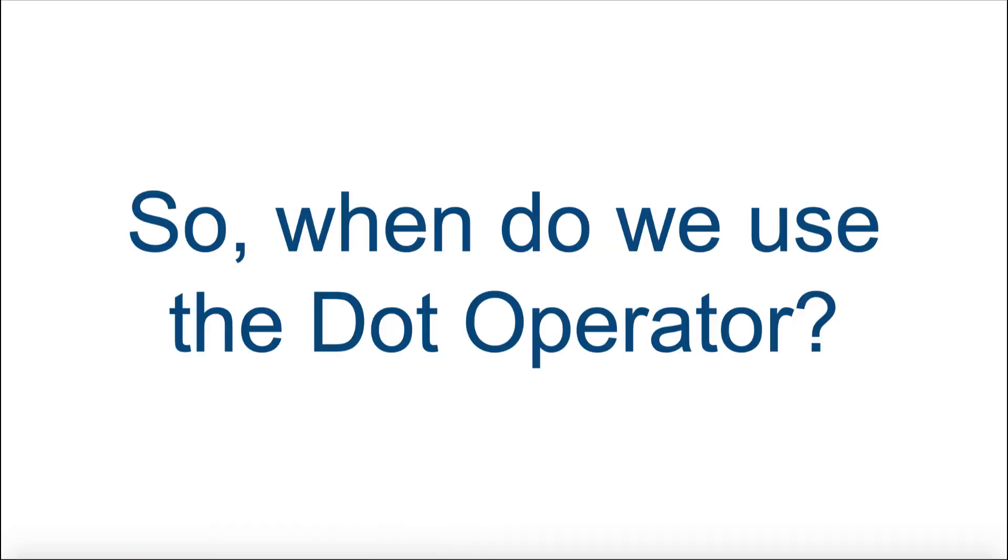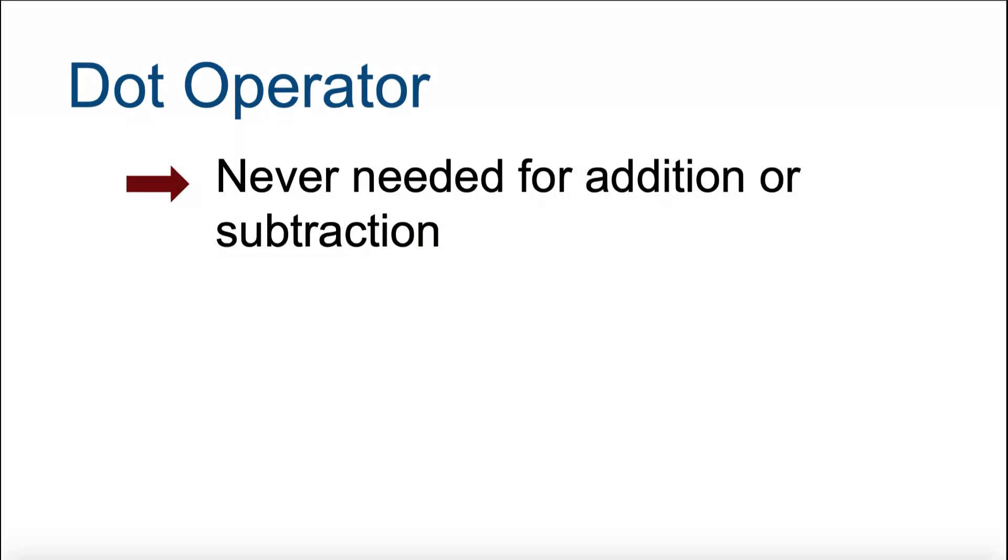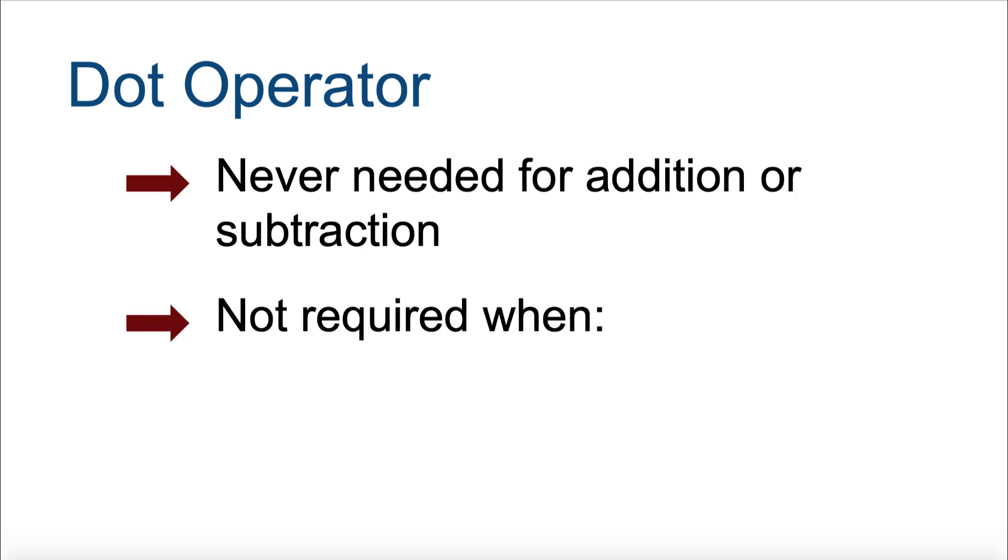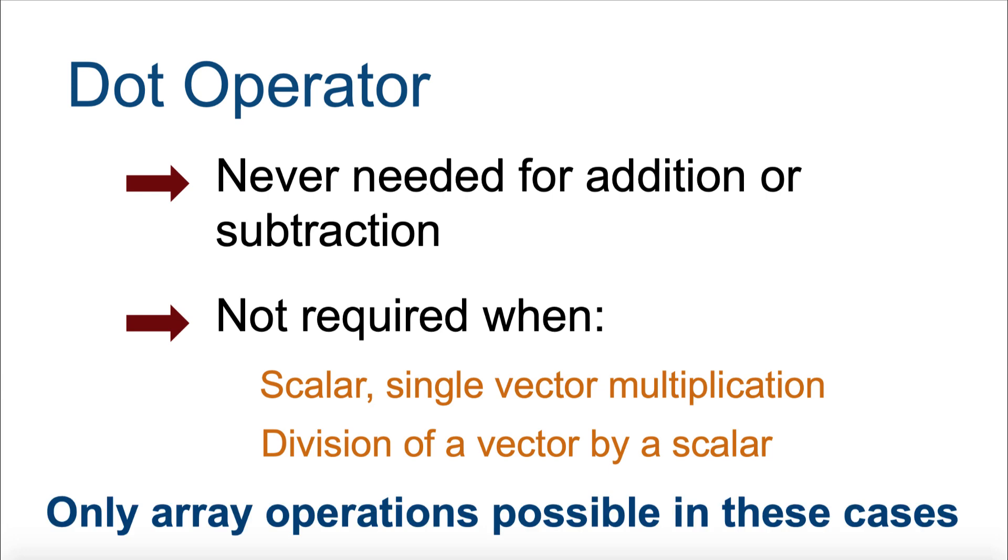So, when do we use the dot operator? Well, since it is only used when both array and matrix operations are possible, the dot operator is never required for addition or subtraction. It is also not required for any scalar singular vector multiplication or division of a vector by a scalar, since there is only one mathematical outcome in each case, array operations.